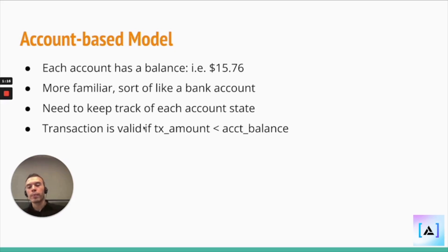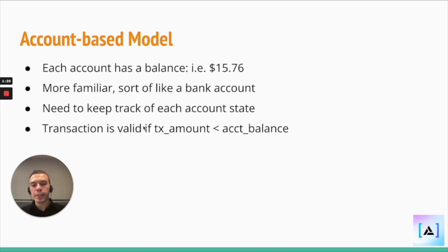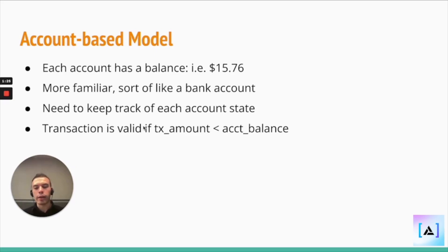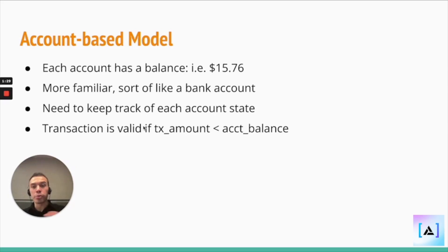So for example, in a bank account you would have $15.76, but it wouldn't keep track of the denominations that got you there. It wouldn't keep track of the fact that you deposited two dimes one time, and those two dimes are under your name.